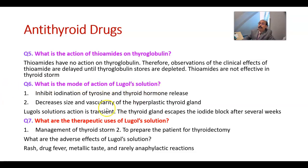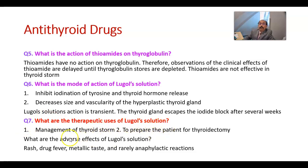What is the mode of action of Lugol's solution? It inhibits iodination of tyrosine and thyroid hormone release, and decreases the size and vascularity of the hyperplastic thyroid gland. However, Lugol's solution action is transient — the thyroid gland escapes the iodide block after several weeks. Its therapeutic uses include management of thyroid storm along with other drugs, and to prepare patients for thyroidectomy.